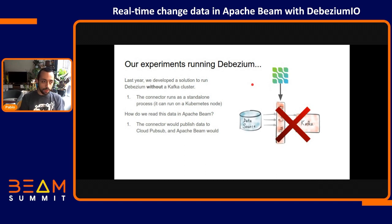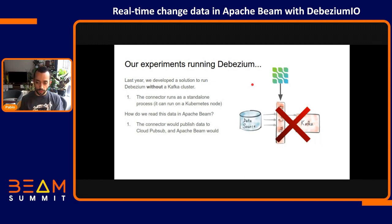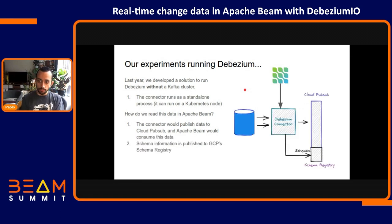As we were considering change data capture and dealing with it in Beam, we wanted to remove the assumption that anyone using this needs to have a Kafka cluster. So last year we developed a solution where we'd have a Beam pipeline on one side, and we would run Debezium without a cluster — Debezium would run as a binary or as a container. We also developed it so that it could publish the change data into PubSub.